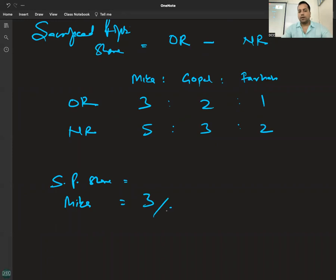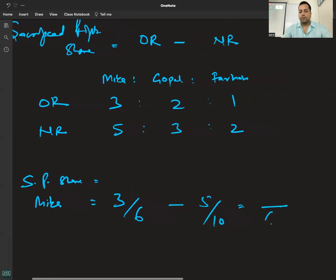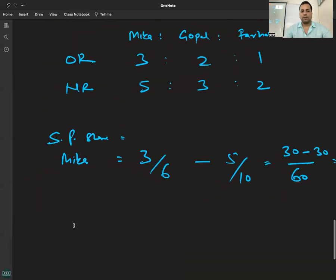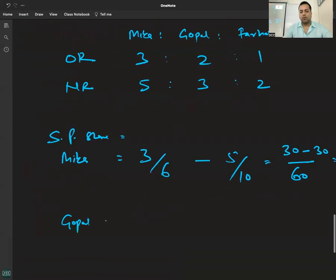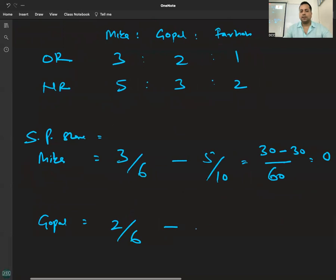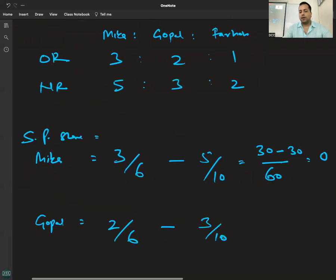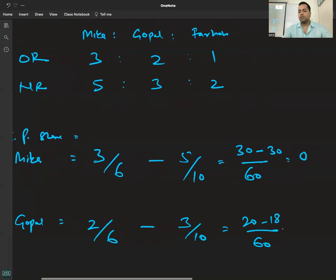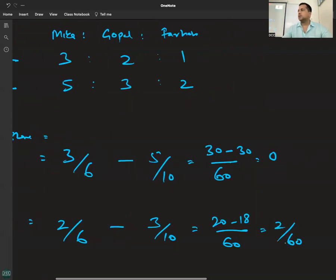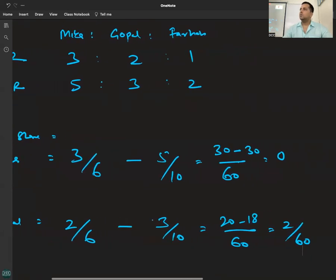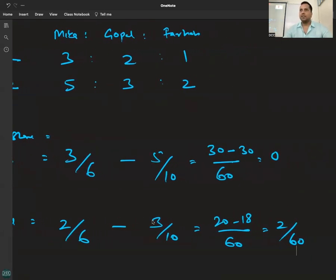For Mita: old ratio is 3/6 minus new ratio 5/10. LCM of 6 and 10 is 60. So 30/60 minus 30/60 = 0. No sacrifice, no gain for Mita. For Gopal: old ratio is 2/6 minus 3/10. LCM 60 gives 20/60 minus 18/60 = 2/60. Positive value — so Gopal is sacrificing.